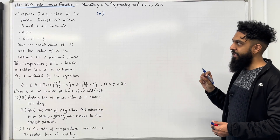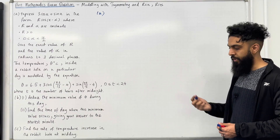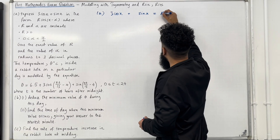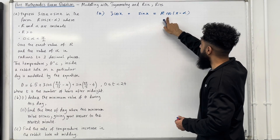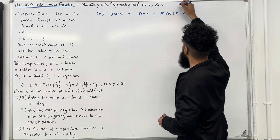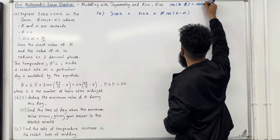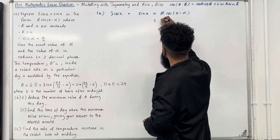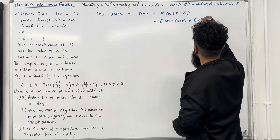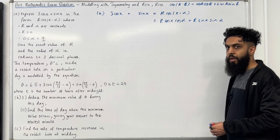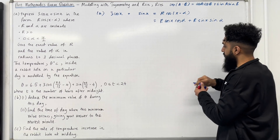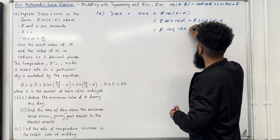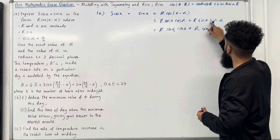The very first step is to set 3 cos x plus sin x equal to r cos(x minus alpha). Now we're going to expand r cos(x minus alpha) using the formula for cos(A minus B), which equals cos A cos B plus sin A sin B. So we get r cos alpha cos x plus r sin alpha sin x.